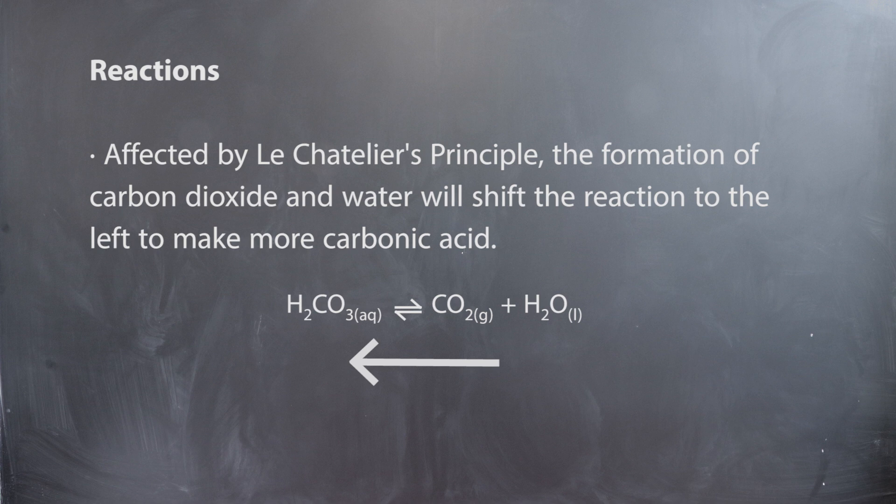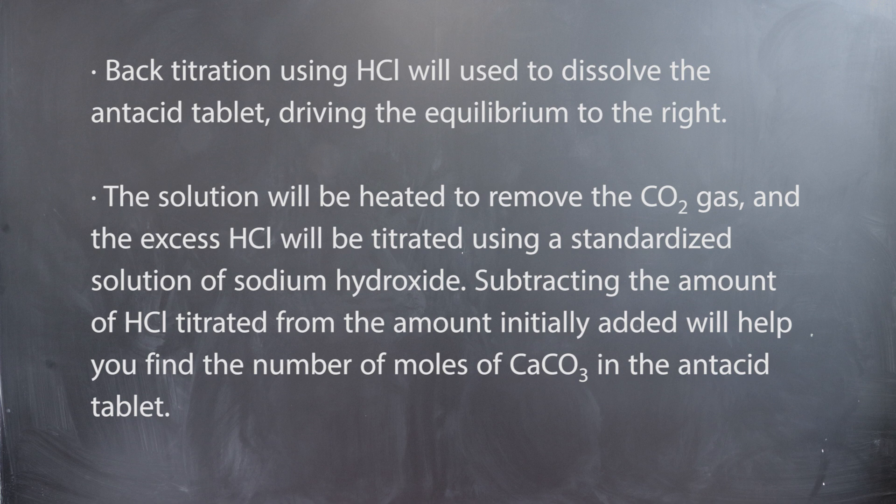Back titration using excess hydrochloric acid will be used to dissolve the Tums antacid, which will drive the equilibrium to the right. The solution will be heated to remove the carbon dioxide gas.